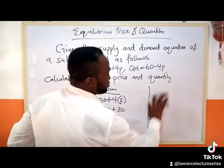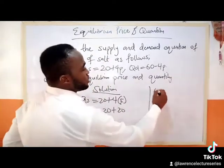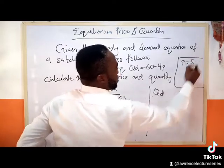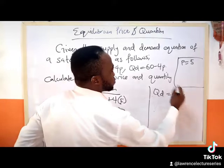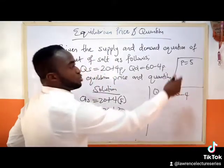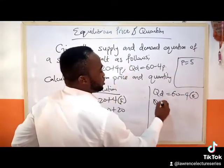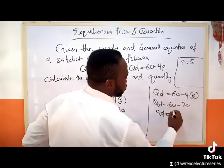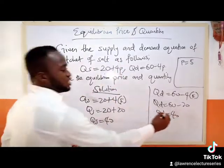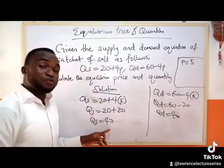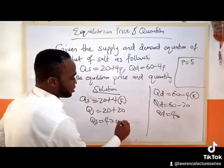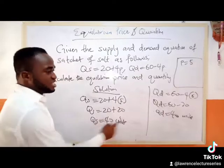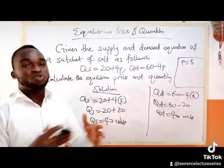We do the same for Qd. Don't forget our p equals 5. So Qd equals 60 minus 4 times 5, which is 20. Qd equals 60 minus 20, so Qd equals 40. We can see that for Qs we have 40 units, and for Qd we also have 40 units. That tells you that we are at equilibrium.